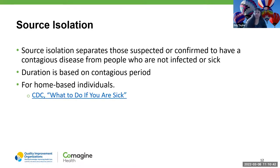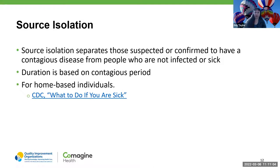Source isolation separates those suspected or confirmed to have a contagious disease from people who are not infected or sick. This is your cohorting — making sure those people who have COVID-19 are roomed together so they don't continue to spread it. The duration is based on the contagious period. The CDC has a great resource for what to do if you're sick. I suggest clicking on that link in chat to get up to date on those things, because they do change quite often.